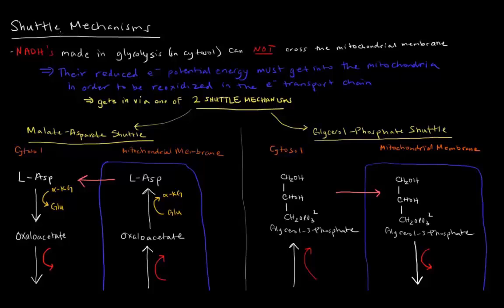In the last video I mentioned shuttle mechanisms as the reasons why NADHs that are made in glycolysis could be valued at 1.5 or 2.5 ATP. The NADHs made in glycolysis, which happens in the cytosol, cannot cross the mitochondrial membrane.